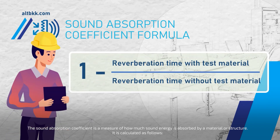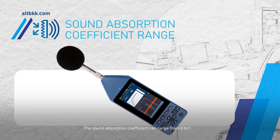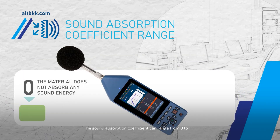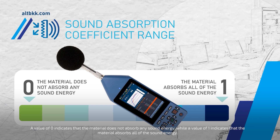The sound absorption coefficient is a measure of how much sound energy is absorbed by a material or structure. It is calculated as: sound absorption coefficient = 1 minus (reverberation time with test material / reverberation time without test material). The coefficient ranges from zero to one — zero indicates no sound absorption, while one indicates complete absorption of all sound energy.